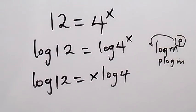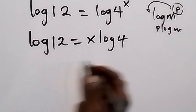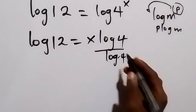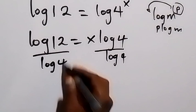And in the next step we can separate log 4 by dividing both sides by log 4. So divide this side by log 4, also divide this side by log 4.